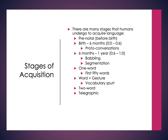We start at the prenatal stage before birth. In the first six months we have things like proto-conversations; the next six months to a year we have babbling; we start segmenting words apart from each other; then we get into the one-word stage with our first 50 words. We move into a word-plus-gesture stage, then a two-word stage, and finally a telegraphic stage. Note that numbers listed with a semicolon indicate year and month — since there are 12 months in a year, it's not a decimal system.